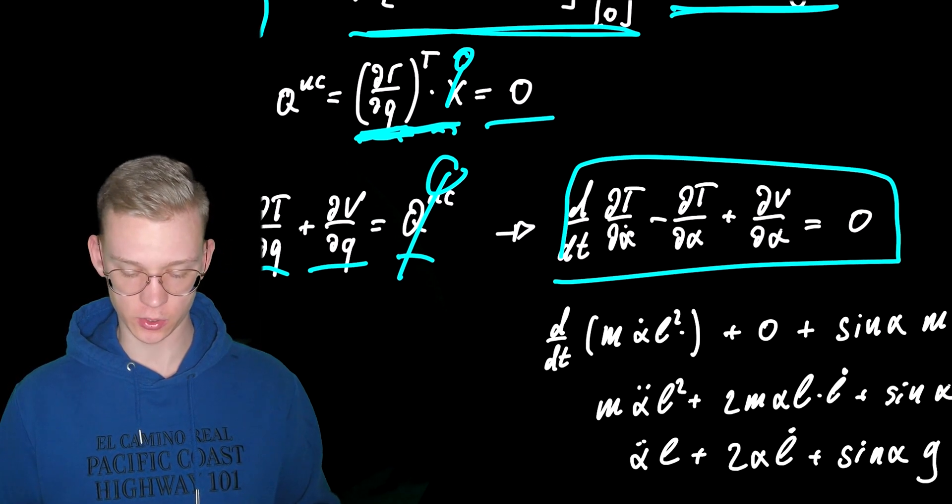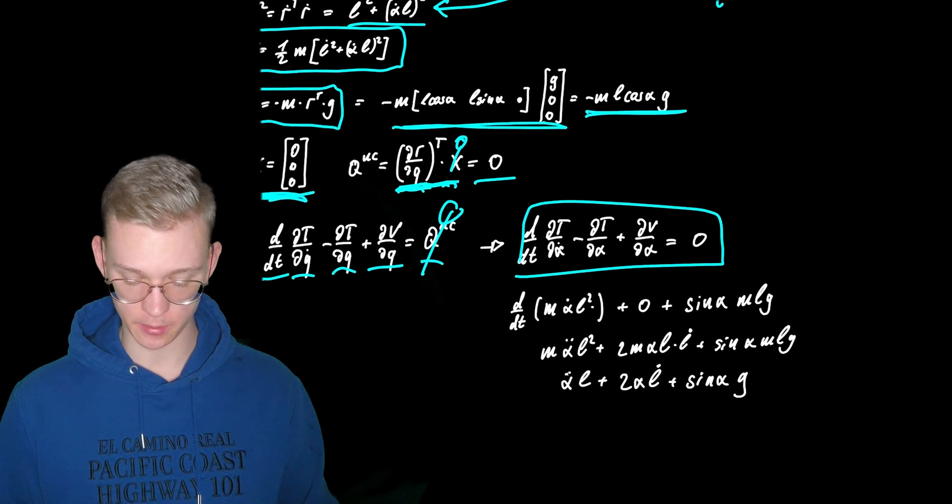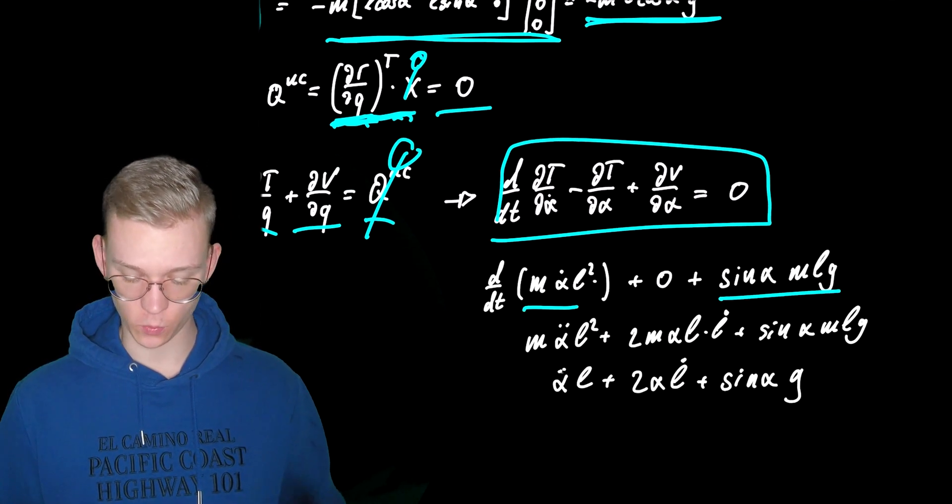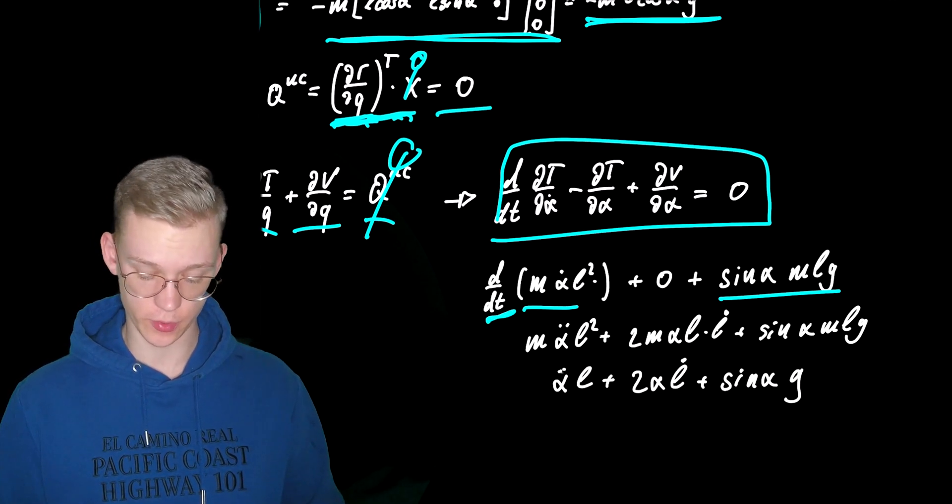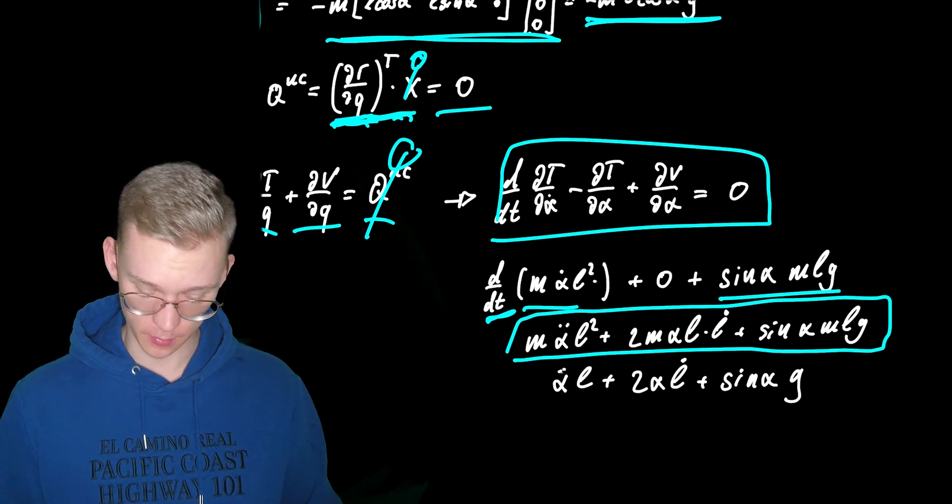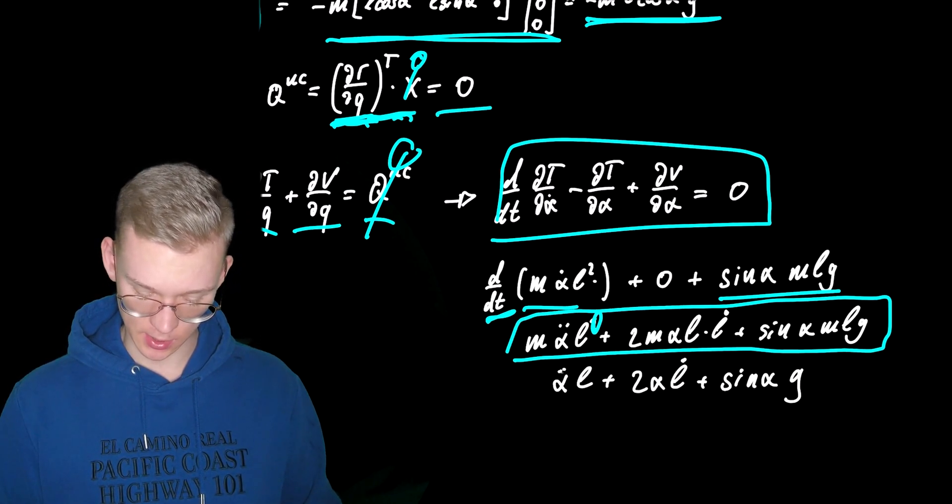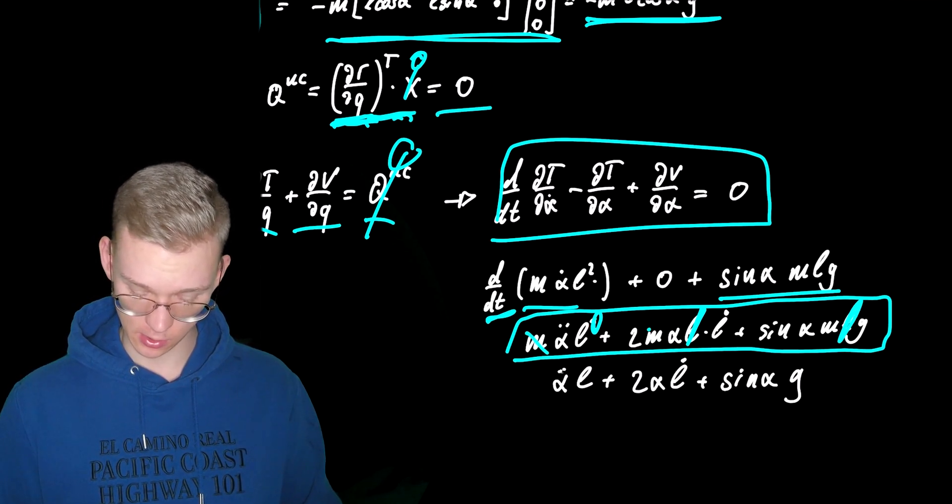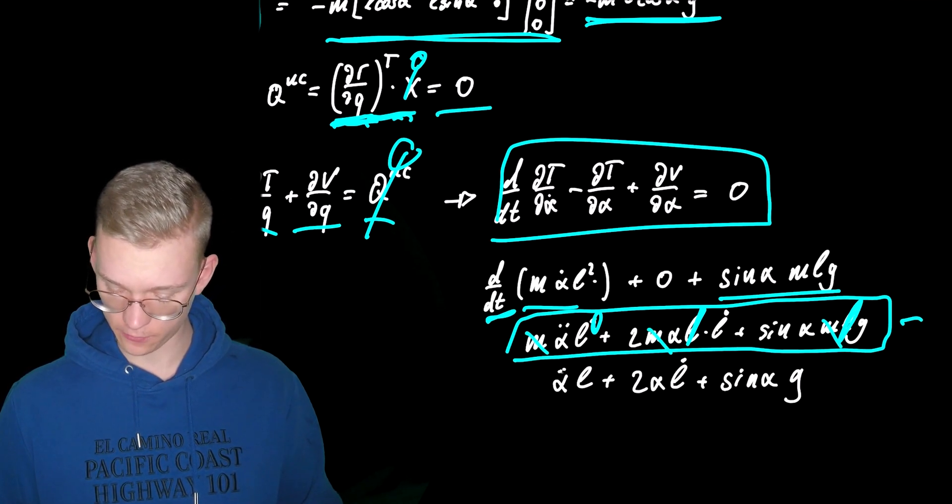Now we just have to enter the potential energy and the kinetic energy. I've done this right here and what we get from that of course we have to do the time derivative. We get the same equation that we had before but now we can just cancel out one l here, one l here, and of course the mass is also in every term.